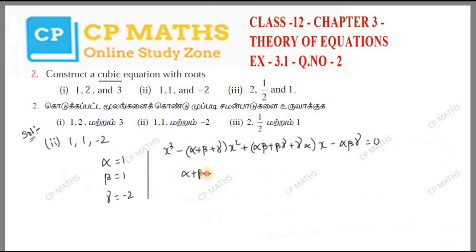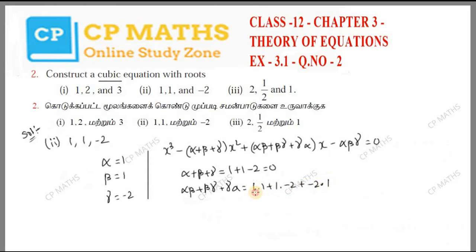First, alpha plus beta plus gamma: 1 plus 1 minus 2, so the answer is 0.